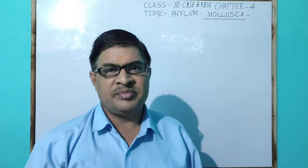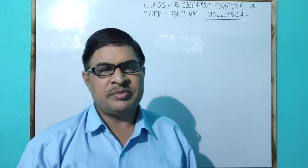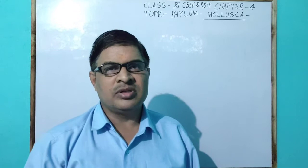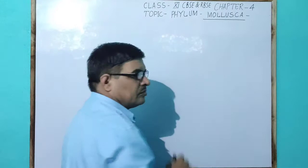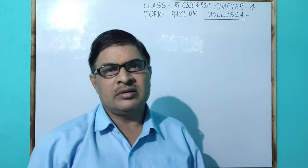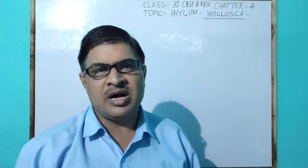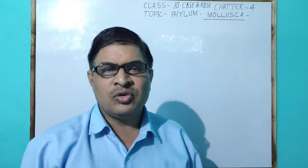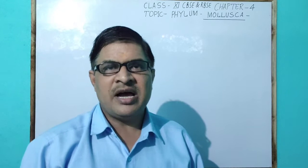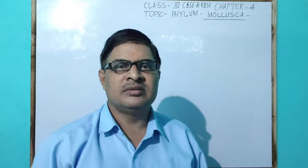I have delivered different lectures in the Animal Kingdom, Chapter 4. Today I will discuss about the topic Phylum Mollusca. Animals are soft-bodied, generally covered by a hard shell which is made by calcium carbonate. Phylum Mollusca is the second largest number of animals after Phylum Arthropoda.